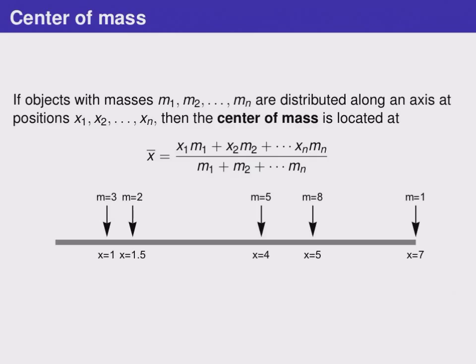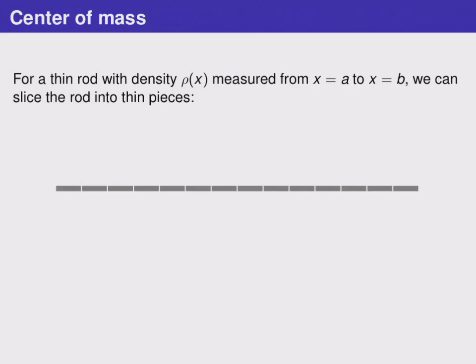Again, this only works if we have constant masses at individual locations. If we were to imagine a thin rod or piece of wire whose density varies from place to place, we can still imagine slicing it into thin pieces and pretending that each of those has a nice constant density so that we could calculate its mass.